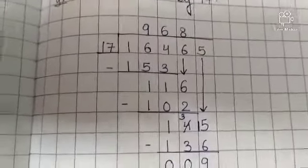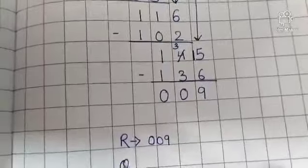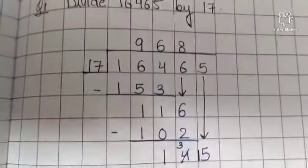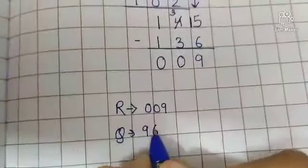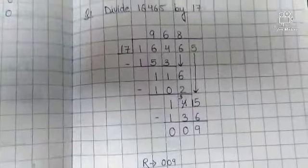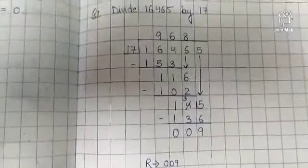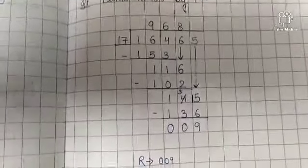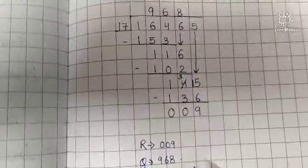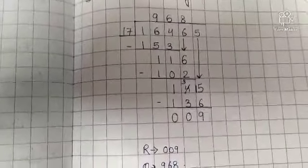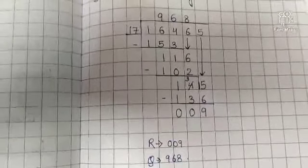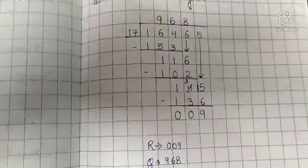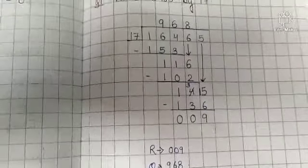So the remainder is 009 and the quotient is 968. Complete this question. Done.